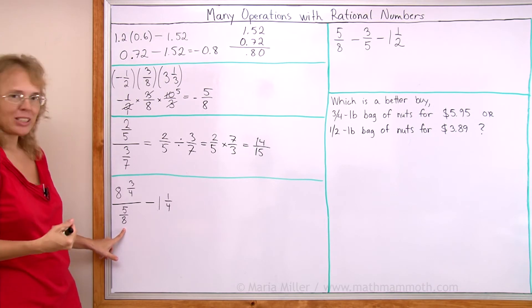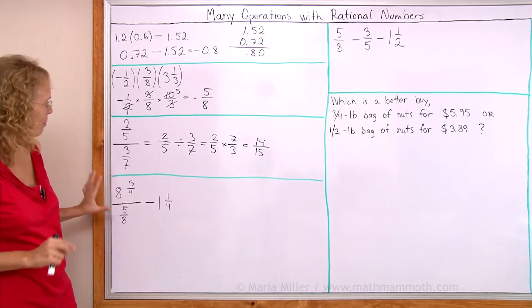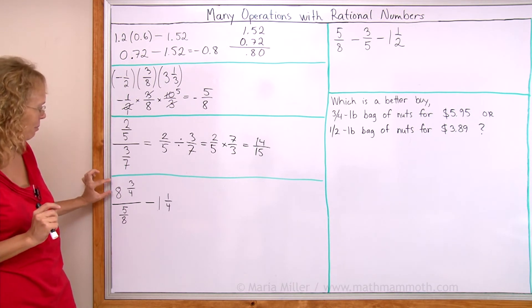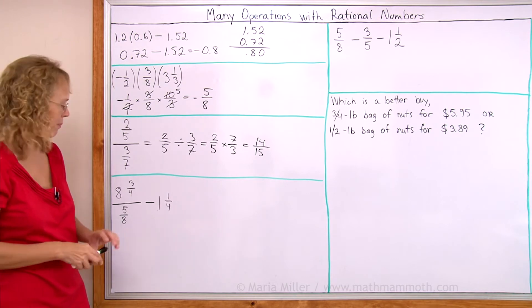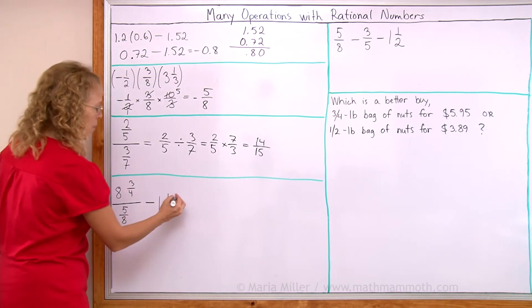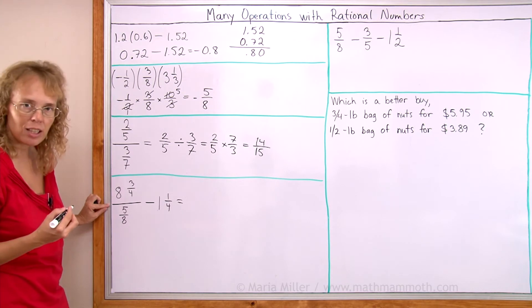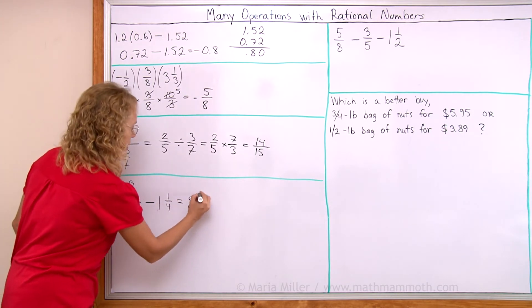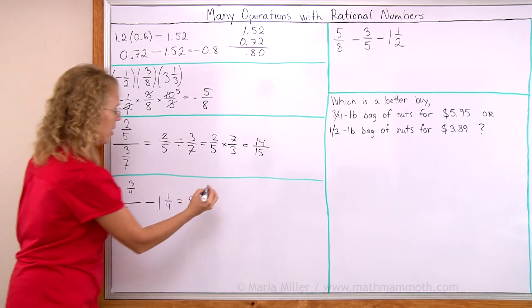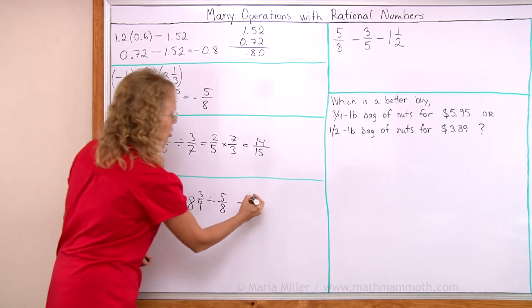This might look monstrous. I hope not. It might look difficult. But again, all it is, is a simple mixed number divided by a fraction. And then there's a subtraction too. But we work it out normally. Let's first write this. Instead of a fraction line, write it using this division symbol. So we get 8 and 3 fourths divided by 5 eighths. And then there's the subtraction too.